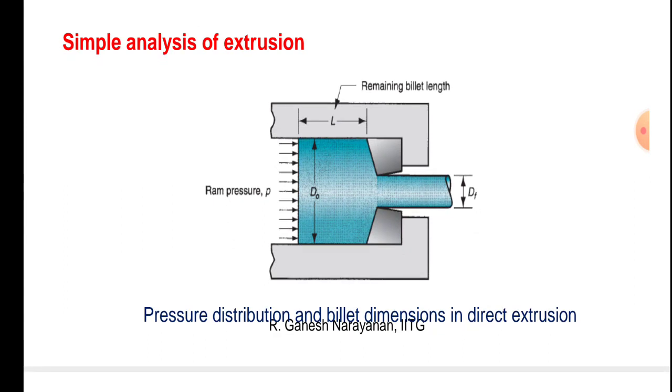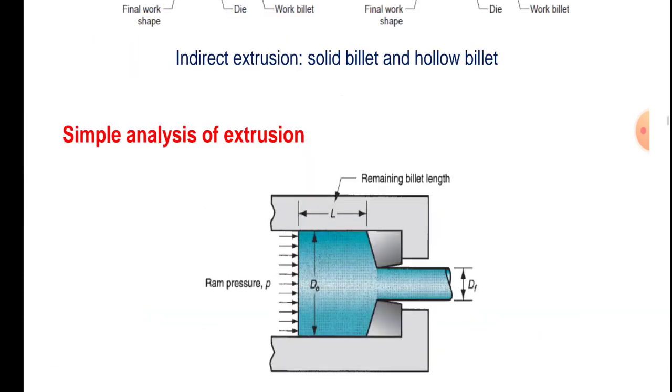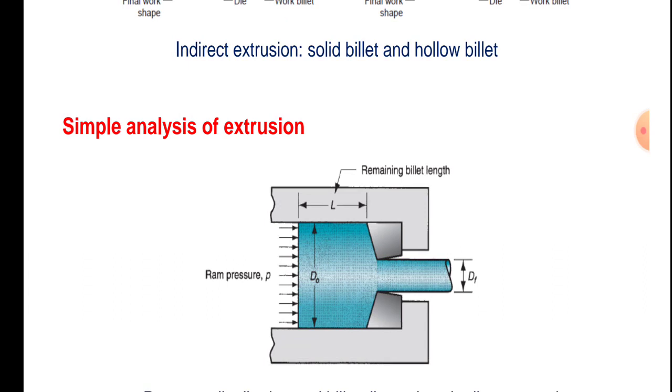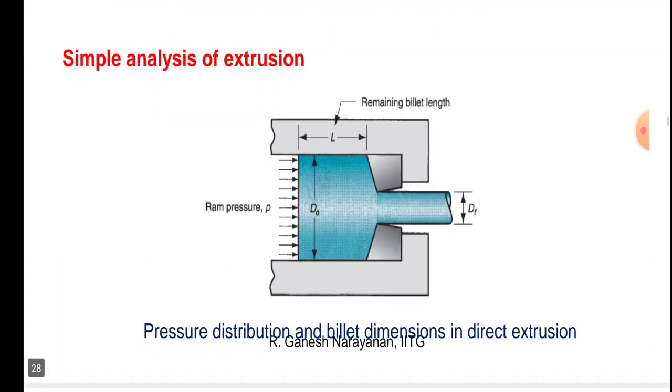In this we will see the RAM pressure P, the diameter D0 of the workpiece length L, remaining billet length is L capital L, and remaining billet length diameter is D0. The product diameter is Df, final product.